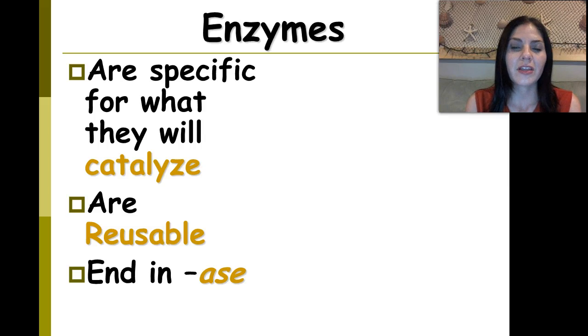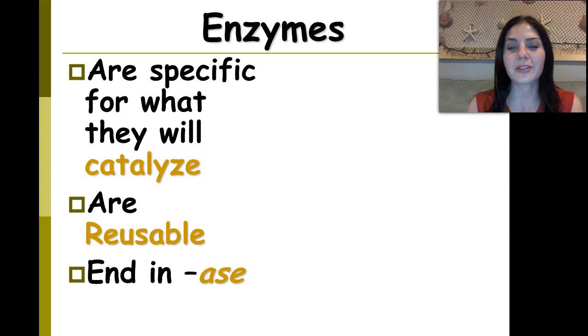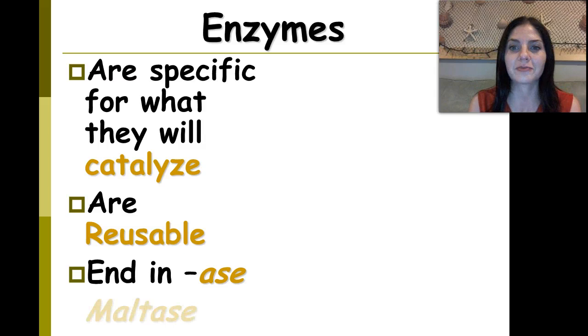They end in -ase for the most part. Some enzymes, like pepsin, don't. There's always one or two things that are confusing in biology.